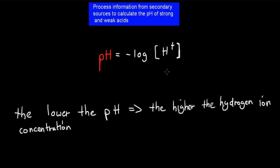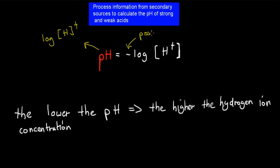First, I'm going to go over again what pH actually is. pH stands for the log of the concentration of hydrogen ions, and we calculate that by taking the minus log of the concentration of hydrogen ions. We have that minus to make sure the actual result is positive, because minus times minus is positive, so that minus will make the pH at the end positive.